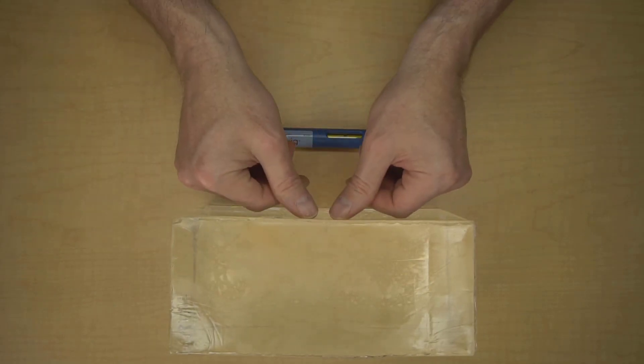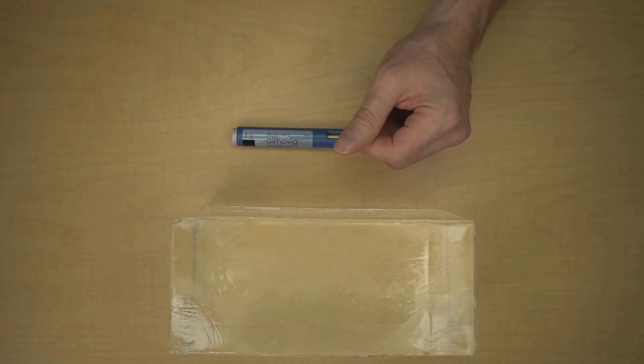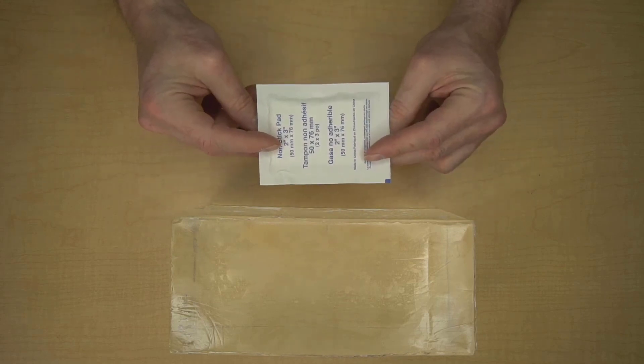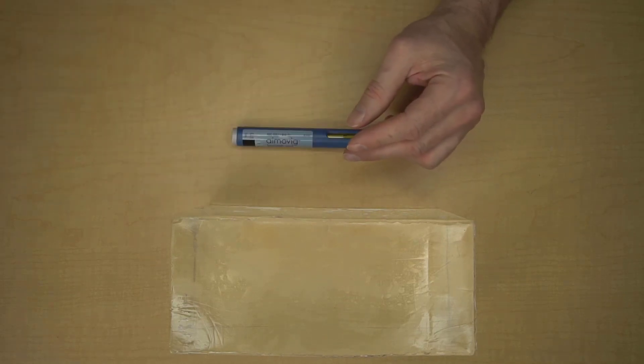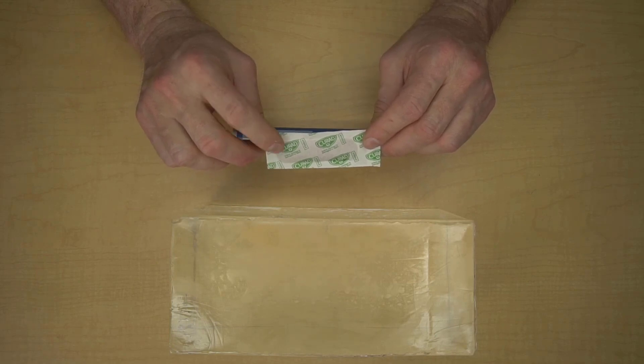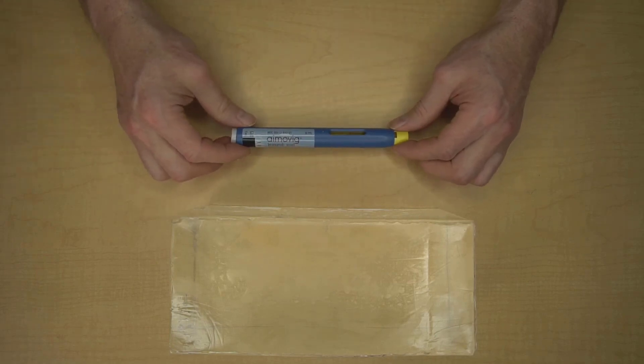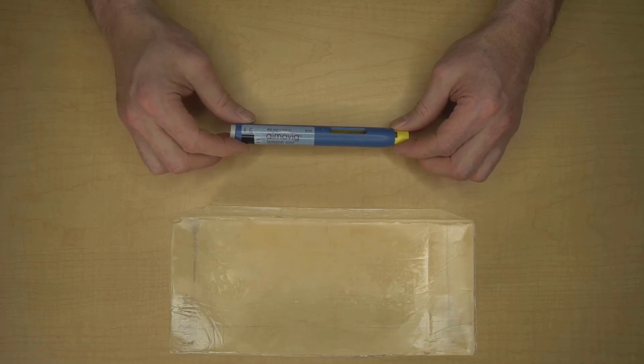After your injection, examine the injection site. If there's blood, you may want to use some gauze and apply a bit of pressure, and if you need to, put a band-aid on it. Dispose of your auto-injector in a sharps container. You can get a sharps container from your pharmacy.